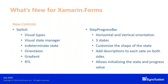The switch also supports orientation, gradient colors, and RTL. The step progress bar can display progress horizontally and vertically, with three states: not started, in progress, and completed. You can customize the shape of the state as circle or square, add descriptions on both sides, and customize the step content with tick, dot, images, etc. I'll show you a demo on this now.